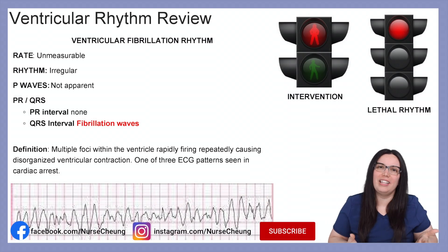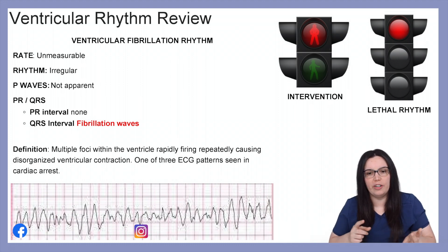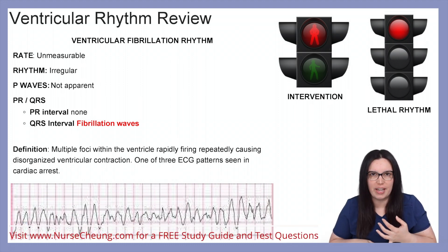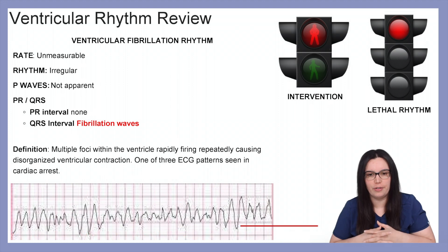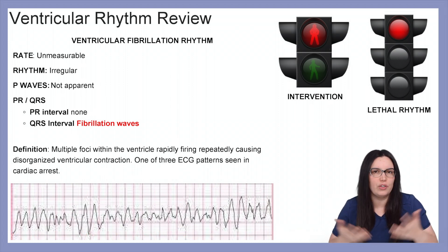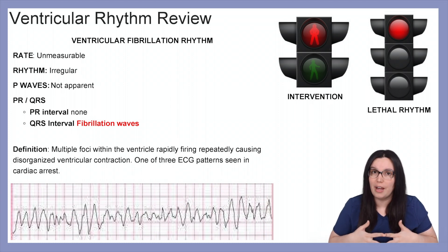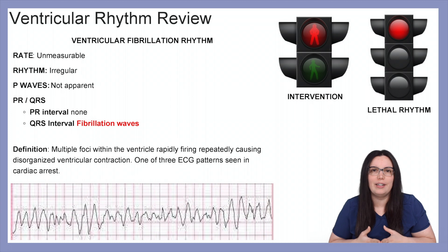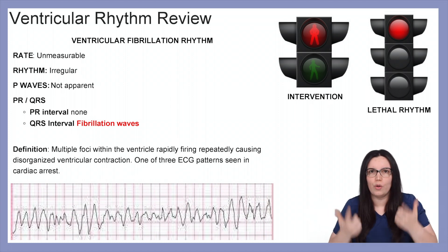Ventricular fibrillation is another one of our lethal rhythms. In regards to the rate, you're not going to find a rate because of all of that fibrillation happening in the ventricles. The rhythm will be irregular, P waves are not going to be apparent, the PR interval will also not be apparent, and the QRS intervals are just going to be a whole bunch of fibrillation waves, shown in the example next to me.